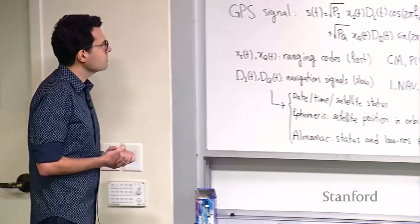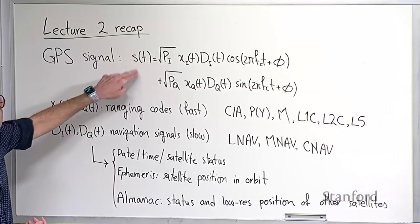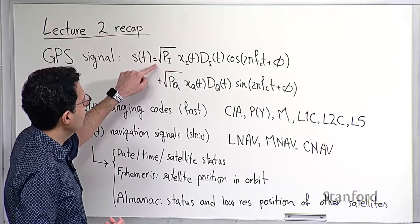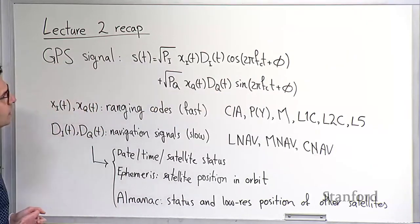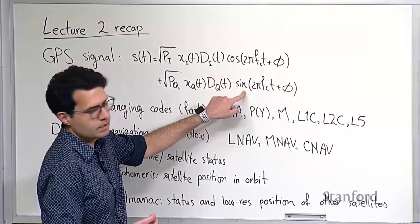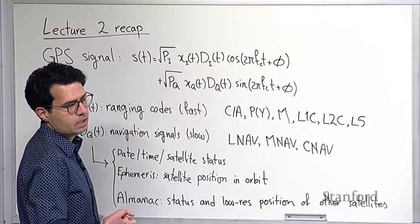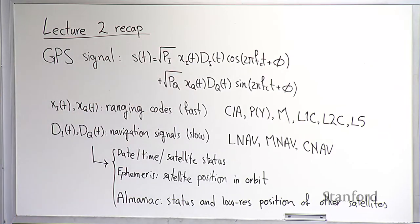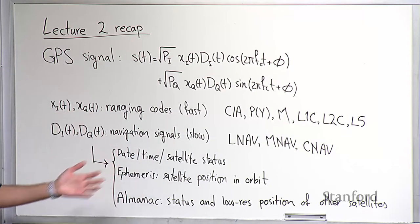Let's remind ourselves where we left off last time. We started with looking at the GPS signal model, given by an equation where a signal is modulated with an in-phase and quadrature component. There is a carrier frequency f_c, so you have cosine 2π f_c t for the in-phase carrier and sine 2π f_c t for the quadrature. Two signals are simultaneously modulated on top of the carrier: x, which is a ranging code, and d, which is a navigation signal. The ranging codes are typically modulated very fast, from a megabit per second to tens of megabits per second.